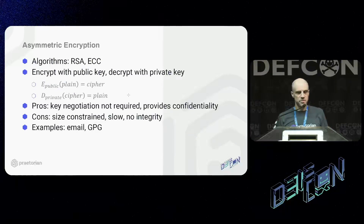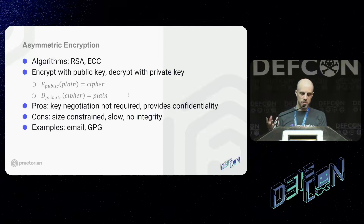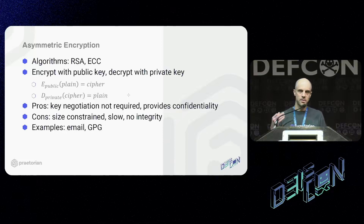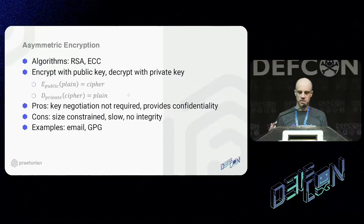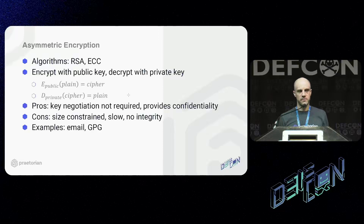Conversely, for this talk, asymmetric encryption is done with algorithms like RSA or elliptic curves. In this setup, you encrypt with a public key and decrypt with a private key. You'd want this for something like email or GPG — you want anyone with a public key to send you a message that only you with the private key can decrypt. Because it's constructed this way, there is essentially no integrity in the encryption. You don't know who sent you the message unless it's been signed out of band. That plays a big piece in this vulnerability.